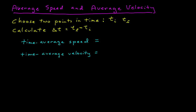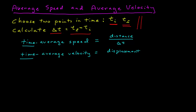The first thing you do is choose two points in time, which I've identified as an initial time and a final time — the two points in time over which you want to calculate the average speed and average velocity. Once you have your initial and final time, you calculate the time difference, which is the final time minus the initial time. The time average speed is the distance divided by delta t, and the time average velocity is the displacement over delta t.